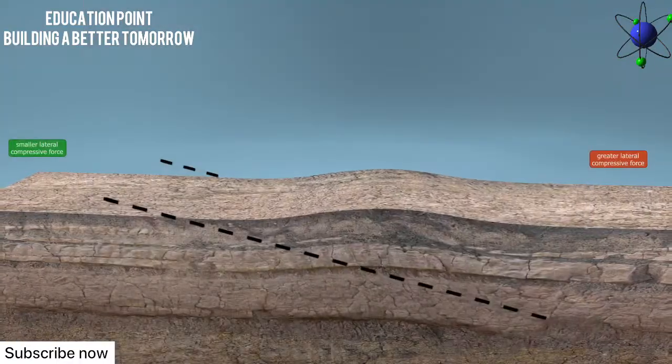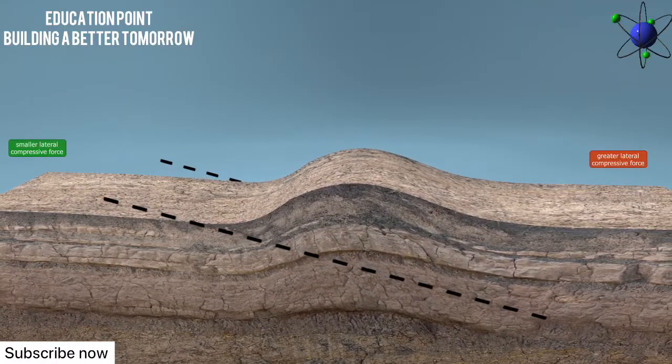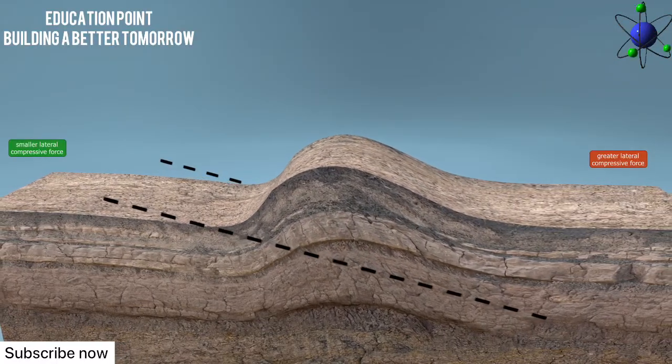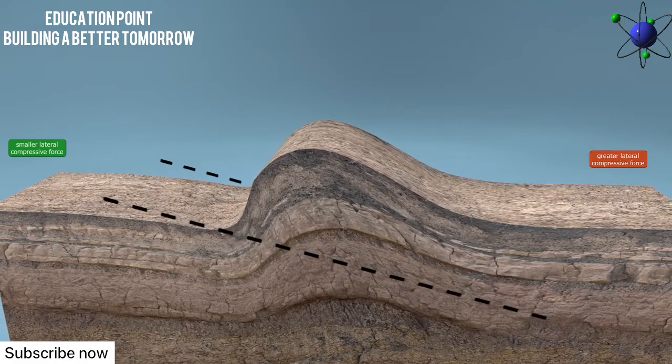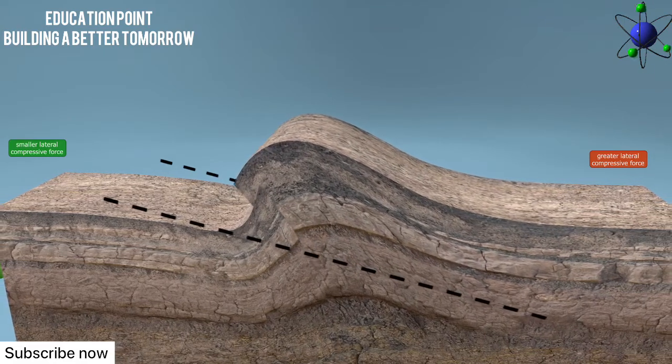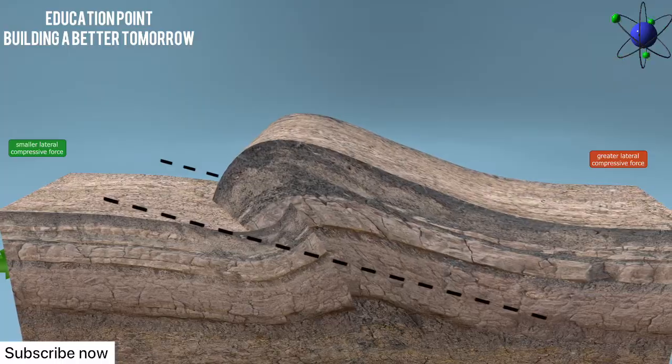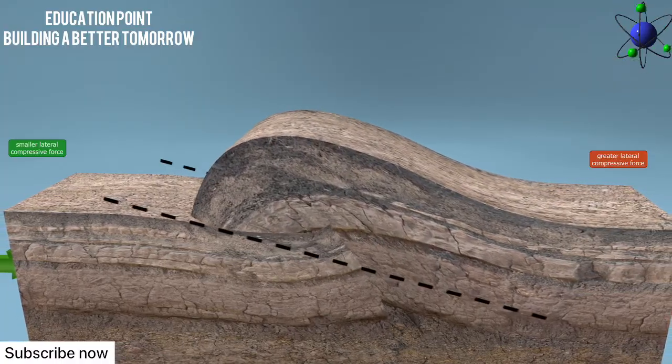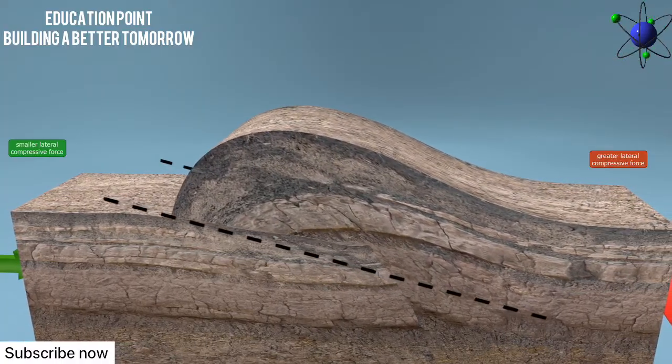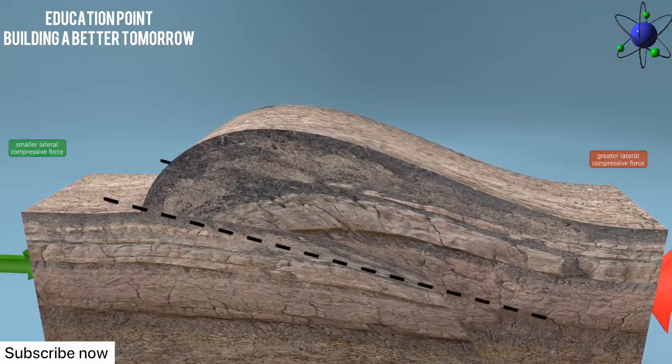When one of the lateral forces is so much greater that the rock layers are broken and one slides over the other, an overthrust fold is formed. These overthrust folds can reach a width of about 100 kilometers. The Alps and the Carpathian Mountains were both formed in folding processes.